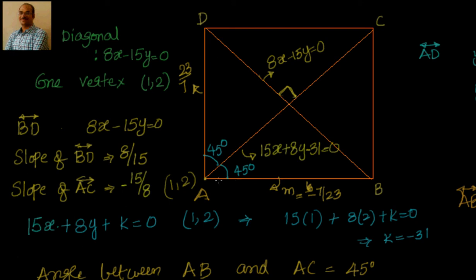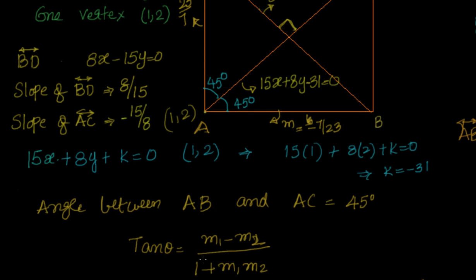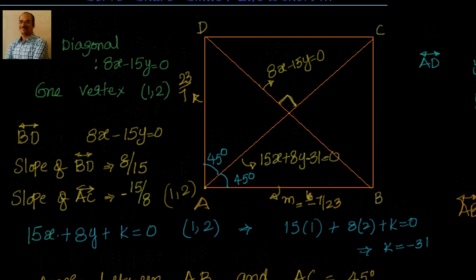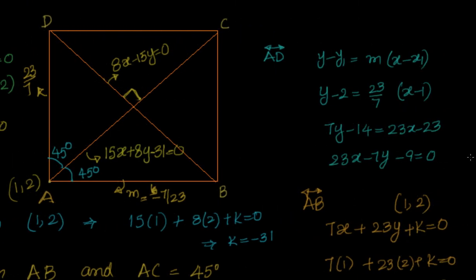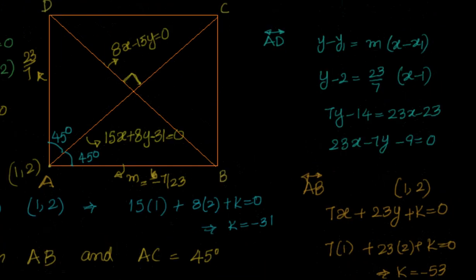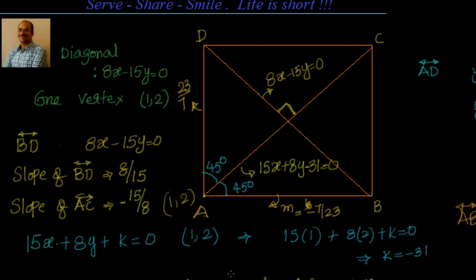Once we found the equation of AC, we used the fact that AB and AD make 45-degree angles with the diagonal AC, applying the formula tan theta equal to (M1 minus M2) divided by (1 plus M1 M2). This gave us the slopes of AB and AD, and using the point-slope form through (1, 2) we successfully found both equations. We will solve one more interesting example in the coming session using this formula for finding the equation of a straight line when the angle between two lines is known.